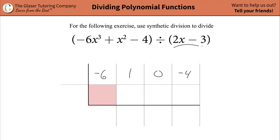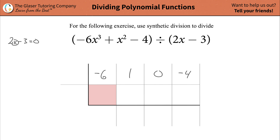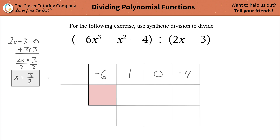Now we've got to work with our divisor. To figure out what number to plug in, you take your divisor and set it equal to 0. We're finding the value of x that gives this binomial a value of 0. Adding 3 to both sides: 2x equals 3, divide by 2, so x equals 3 over 2. That's the value we're going to plug in here — 3 over 2.